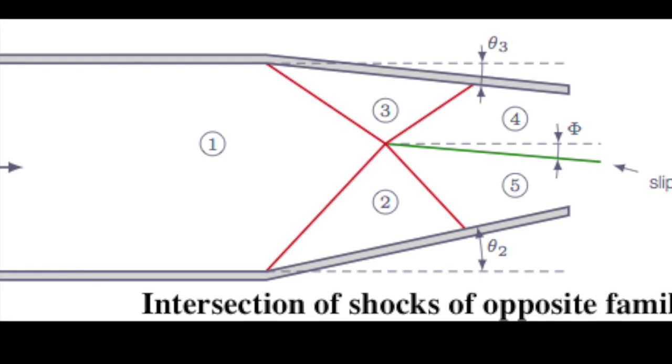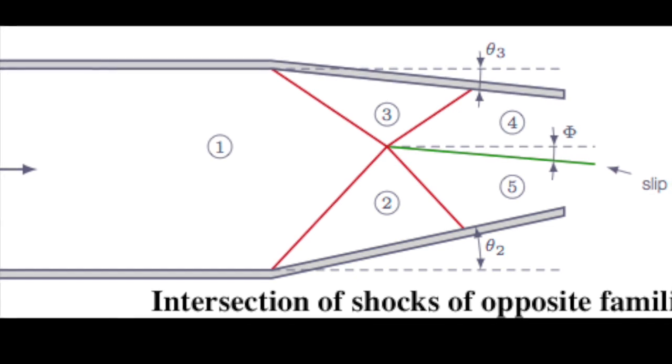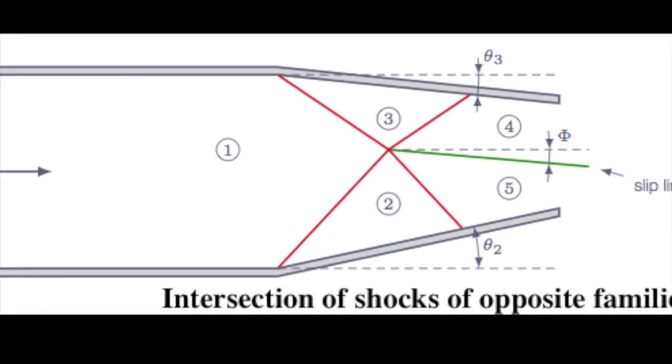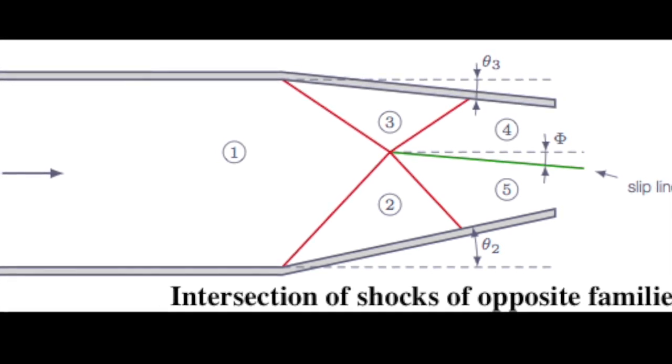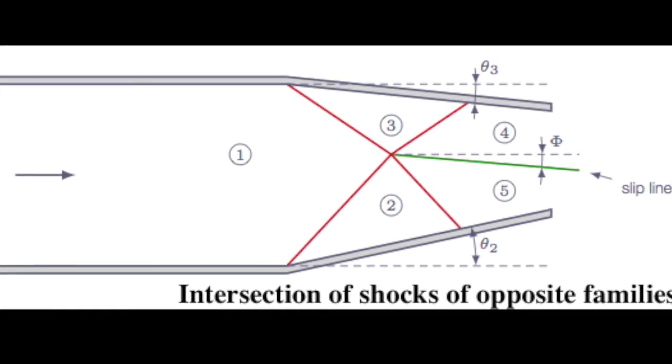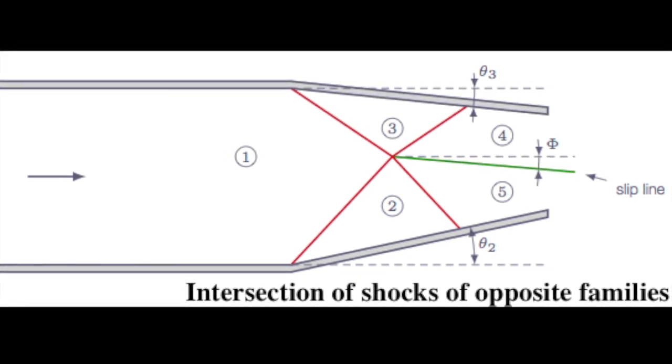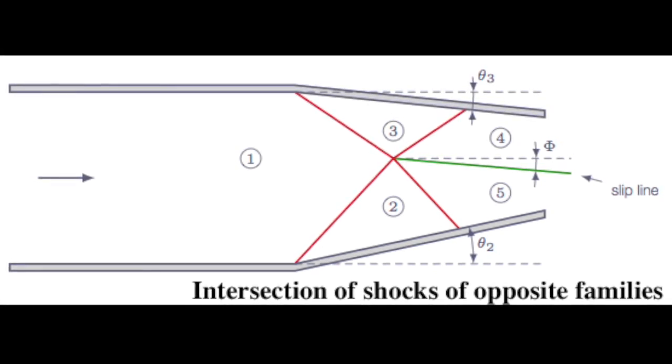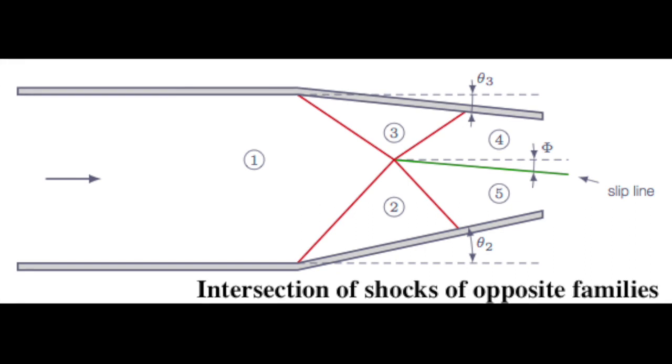However, there are conditions that must hold across the slip line: The pressure must be the same otherwise the slip line would be curved inconsistent with the geometry. The velocities in the different regions must be in the same direction although they are in general different in magnitude. These two conditions along with the known properties in region 1 as well as the known theta 2 and theta 3 completely determine the shock intersection.